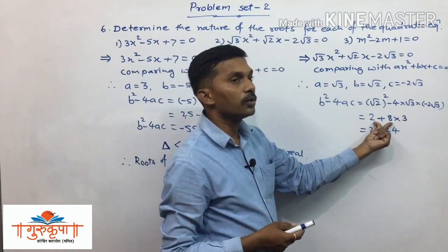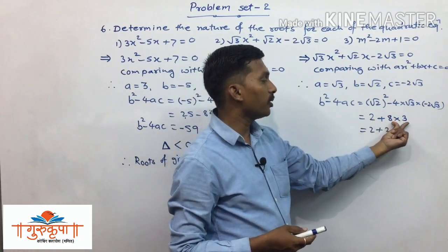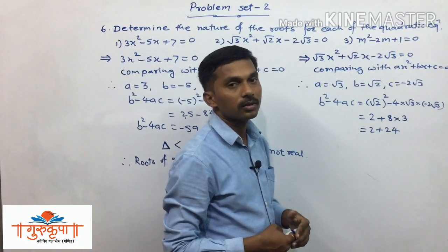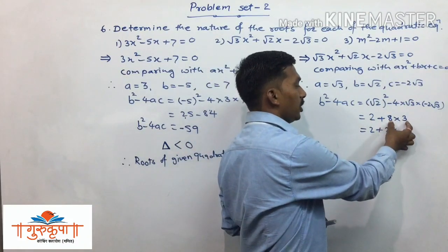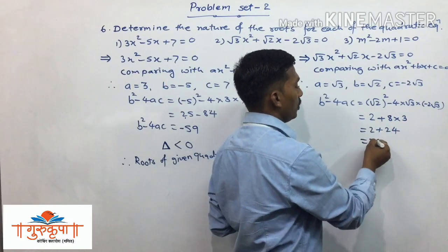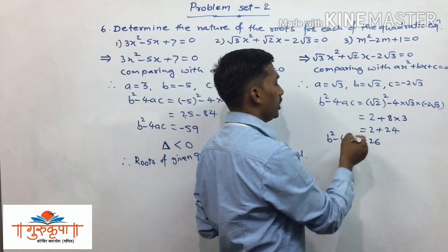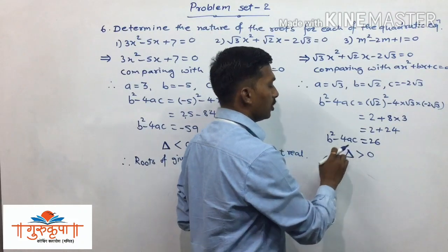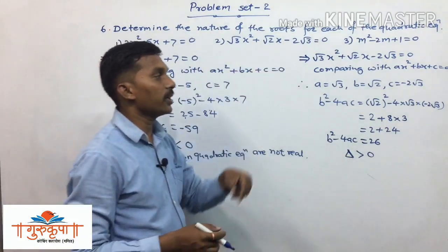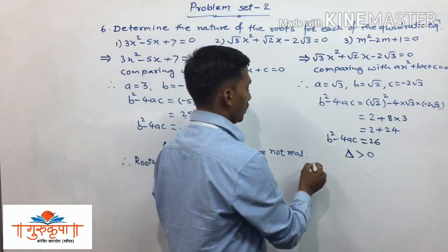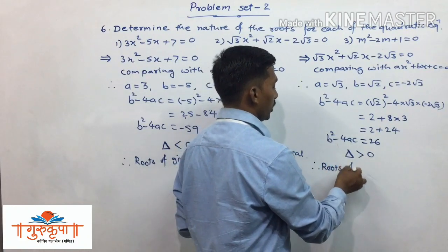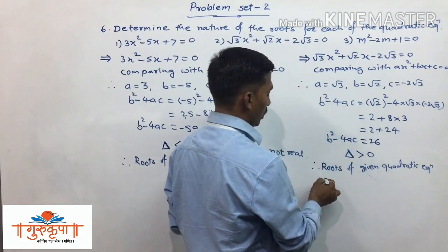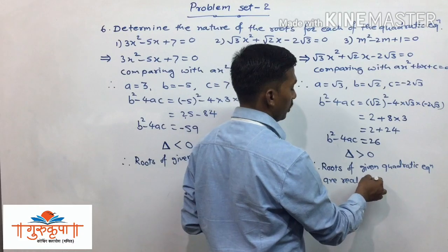Be careful not to add first — you must take multiplication before addition. Some students might write 2 plus 8 equals 10, then 10 times 3 equals 30, which is wrong. We must multiply first: 24 plus 2 is 26. Since the value of delta is 26, delta is greater than 0. Therefore, the roots of the given quadratic equation are real and unequal.